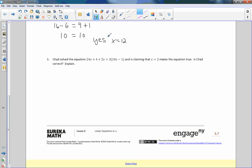Number 3. Chad solved this equation. And he's claiming that x equals 2 makes the equation true. Is Chad correct? Explain. Now all we're doing is taking this equation, and we're going to plug in 2 for every x we see, which there are 3. Just recopy the problem, replacing x with 2. And I'm going to use a different color for my x so they stand out.